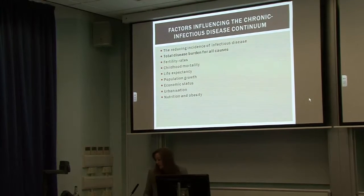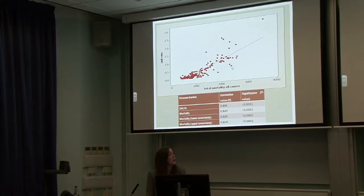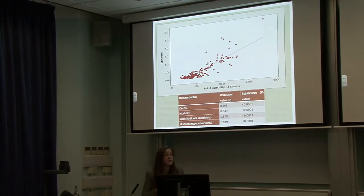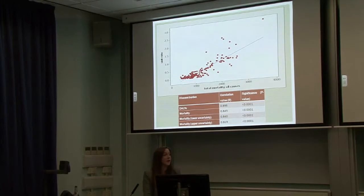Looking at the next factor - total disease burden for all causes - there is a strong correlation: as you decrease the total burden of disease, non-communicable diseases start to make up a bigger proportion. It's basically the reduction in infectious diseases that is having this impact.